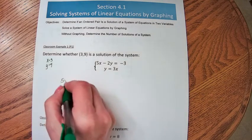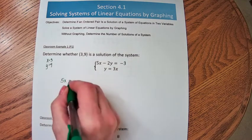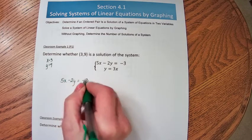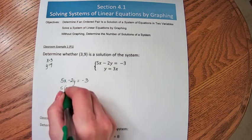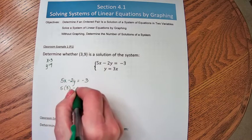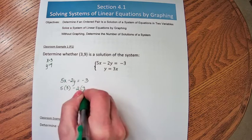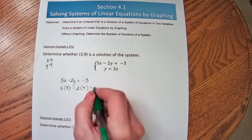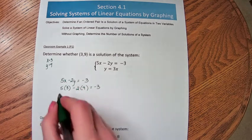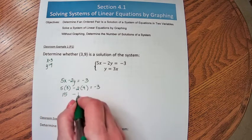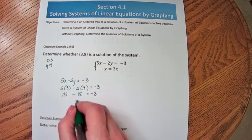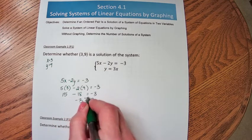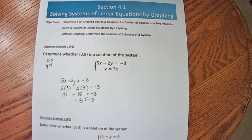Let's take the first equation: 5x minus 2y equals negative 3. We're going to plug in 3 for x and 9 for y. 5 times 3 minus 2 times 9 — does that equal negative 3? 15 minus 18 — does that equal negative 3? Does negative 3 equal negative 3? So far it's looking like this point is a solution to the system.